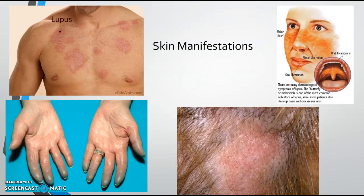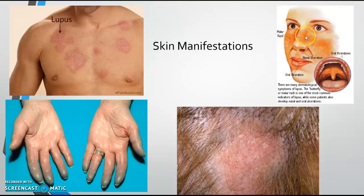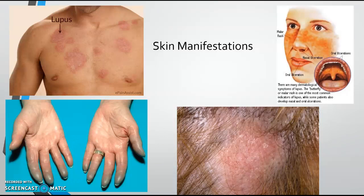For visual learners, here is an example of discoid lesions, which almost looks like psoriasis. The malar rash is that butterfly-shaped rash across the bridge of the nose and cheeks. Another example of a discoid lesion is shown, along with a picture of Raynaud's phenomenon. Patients with autoimmune disorders are much more likely to develop Raynaud's — that vasospasm occurring with cold exposure leading to hypoxia of the fingers.